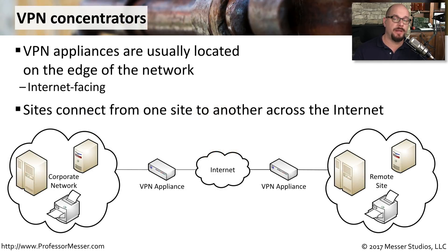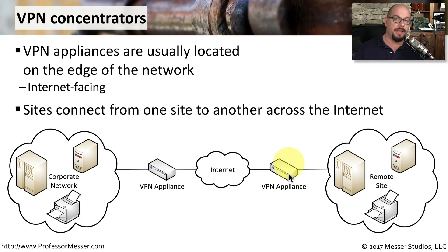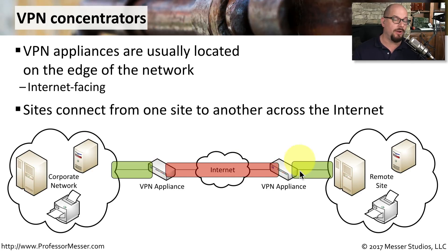If you need to configure VPN communications into and out of your network, you're probably going to implement a VPN concentrator. This is usually a purpose-built device — a standalone VPN appliance, or it may be integrated into another technology such as a firewall. It's common to install these on one side of an internet connection and install another VPN appliance on the other end, then configure a VPN tunnel so that all of the information between these two locations will be encrypted between the different VPN appliances.